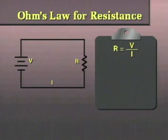Just as with current, the basic Ohm's law formula can be transposed to solve for resistance. We begin with the basic formula, V equals I times R.